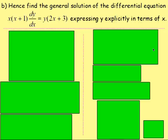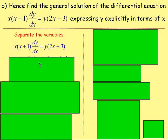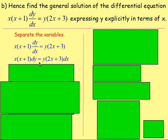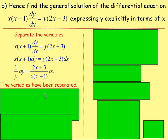For part b, we need to find the general solution of x(x plus 1) dy/dx equals y(2x plus 3). The first thing is to separate the variables. Multiply both sides by dx, giving x(x plus 1) dy equals y(2x plus 3) dx. Then divide both sides by y and by x(x plus 1). That gives 1 over y dy equals (2x plus 3) over x(x plus 1) dx. The variables have now been separated.